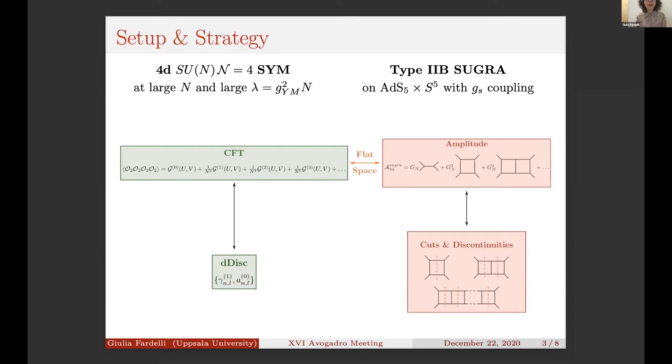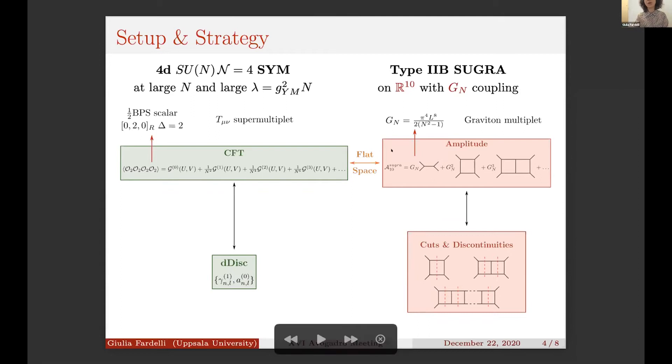The objects we are considering are, on the CFT side, the four-point functions in a 1/N expansion in inverse powers of N, and these are dual in general to a genus expansion of amplitude in curved space. But as I was mentioning before, we are considering this flat space limit, so we are considering amplitudes in ℝ10 expanding in G_Newton, where this quantity is related to the color number by this relation, and there is a connection between expansion in 1/N and loop expansion of the amplitude.